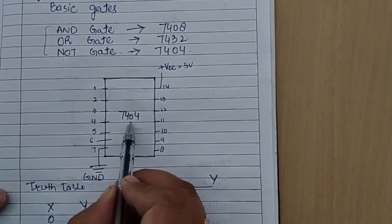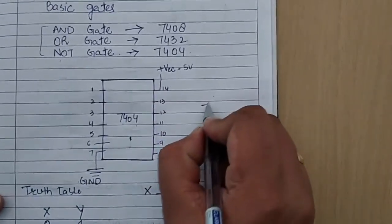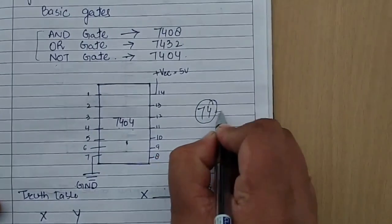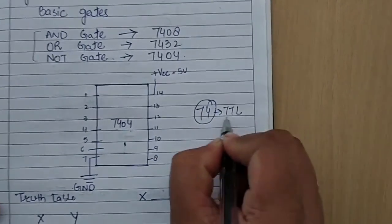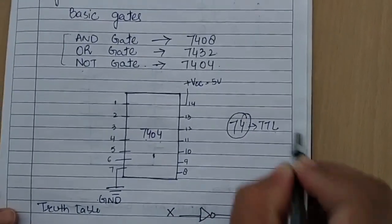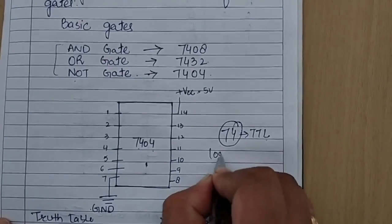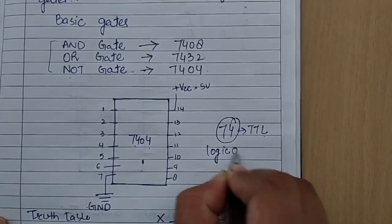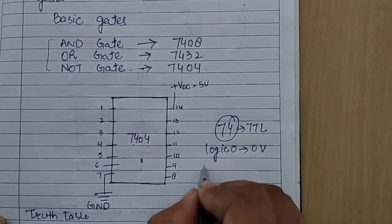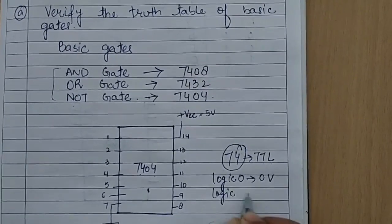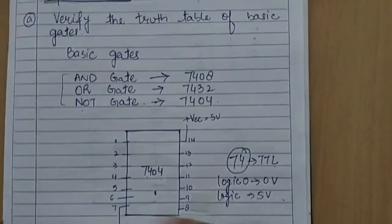For the NOT gate we use IC 7404. The 7400 series stands for TTL logic series, that is transistor-transistor logic. For this particular logic, we will give logic 0 as 0 volt and logic 1 as 5 volts. I am going to show you the IC.